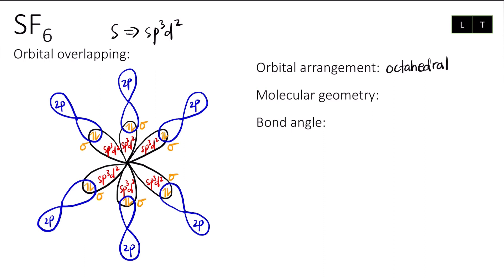Don't forget to label: the center is sulfur. Each 2p orbital is for fluorine — there are 6 of them. For the 2p orbital label on the terminal atom, just label one of the loops — you don't need to write '2p' on both loops, just one is enough.